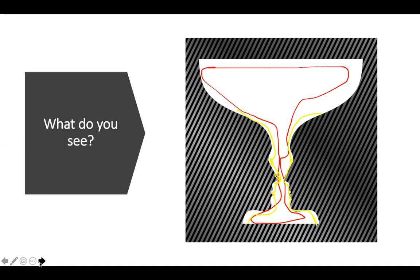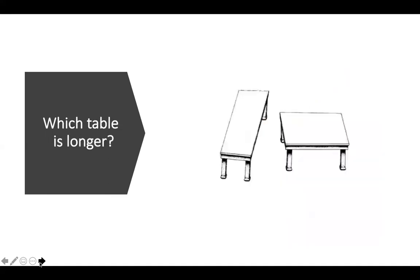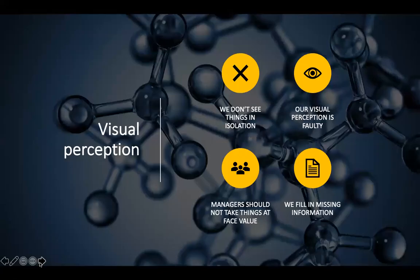So at first glance, if you've never seen this picture before, how do you make sense of it? My next question is: which table is longer? This is an illusion — they are the same length and the same width. But because of the way they are placed, it looks like the left one is skinnier and longer.